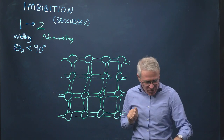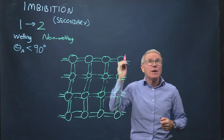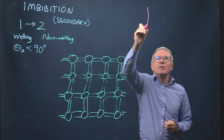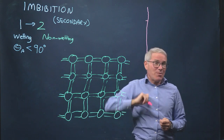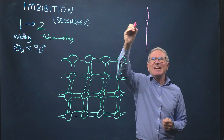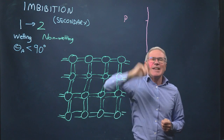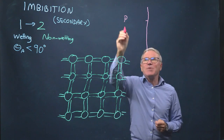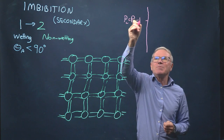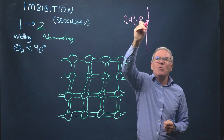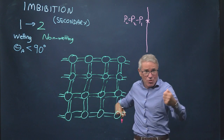We fill most of the pores and throats, and we're left with the wetting phase just squeezed into the corners. So we're going to do the same in terms of capillary pressure, but now I'm going to do it the other way round. We've got P_c starting very high — P_c is P2 minus P1 — and we start with a high value at the end of primary drainage.